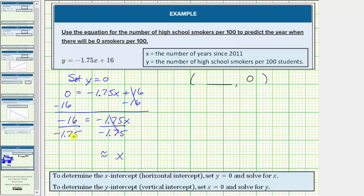And negative 16 divided by negative 1.75 is approximately 9.14. So now we know that the y value is equal to zero when x is approximately 9.14. Now this x value represents the number of years since 2011.